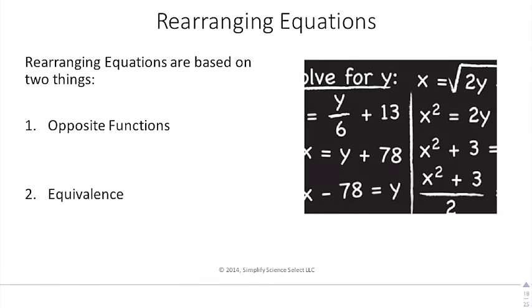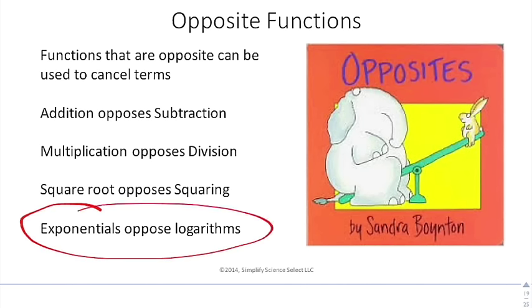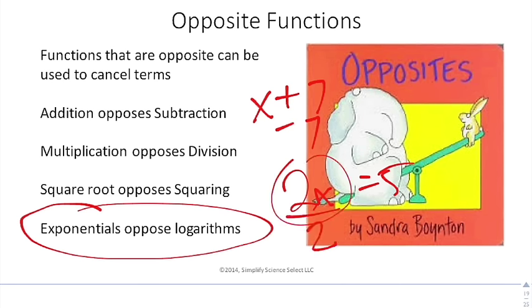Whenever you choose to rearrange an equation to solve for something, it's really important that you understand the basis behind this. It's the idea of opposite functions and equivalents. You should know this, but addition opposes subtraction, multiplication opposes division, square root opposes squaring, exponentials opposes logarithms. This should be really the only one that you might not be familiar with, and we're really not going to get into this until later in the year. But you should know that if you have X plus 7, the way to isolate X is to subtract 7. If you have 2X equals 5, you should be able to say, I can get X by itself by dividing by 2 because these two are multiplied.